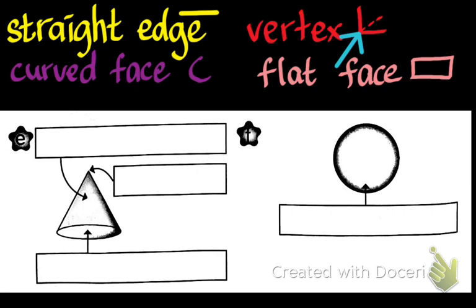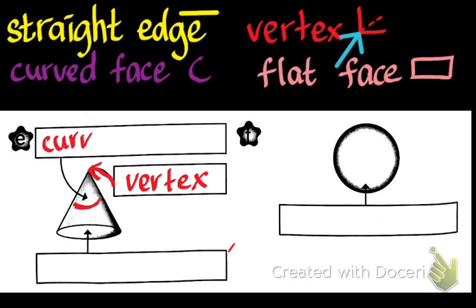How about this area? We call it curve face. Curve face. Next one, it's a cone. What do you call this one? It's a vertex. How about this one? It's a curve face. What about this one? It's a flat face.